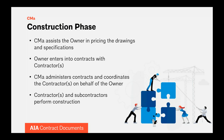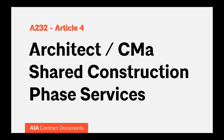Once construction begins, the CMA provides the same management and coordination of contractors that a general contractor would for their subcontractors in a traditional bid or CMC project. The owner still awards and holds all of the direct owner construction contracts. The CMA has a daily presence at the project site and becomes an additional set of eyes and ears on the work for both the owner and architect, augmenting architect services. The CMA and architect share a number of roles and responsibilities during construction.